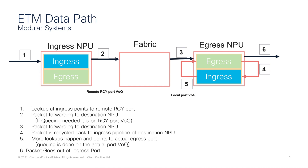Here is the data path for a modular system for ETM traffic. Whenever traffic hits my ingress NPU and a lookup happens, it will point to the remote recycle port and be forwarded via the fabric towards that remote recycle port. If queuing is needed, I will queue here on the ingress NPU for the VoQs dedicated to the remote recycle port. Once the packet reaches my destination NPU, it hits the recycle port and is recycled back to the ingress pipeline where a lookup is performed again, pointing to the actual port VoQs. Whatever queuing needs to be done is based on the actual port VoQ and the actual egress policy. Finally, the traffic goes out of the egress port in step six.